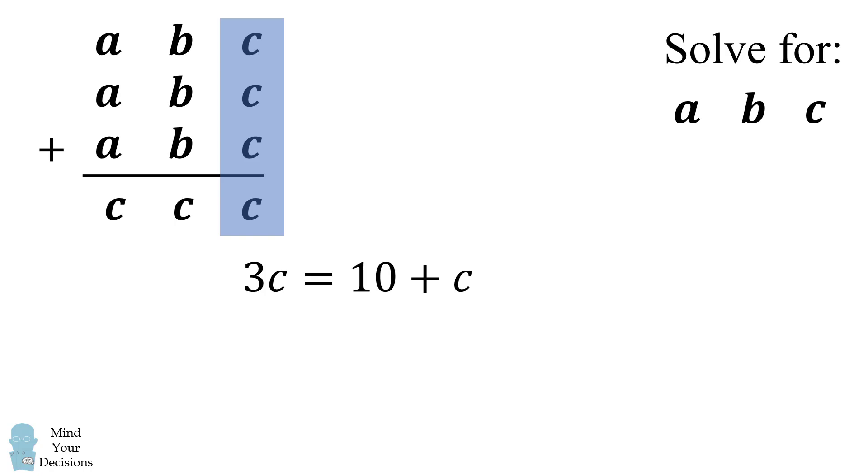So that leaves the final possibility that 3c is equal to 10 plus c. We can solve this to get that c is equal to 5. Therefore the final result is 555.